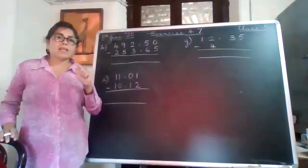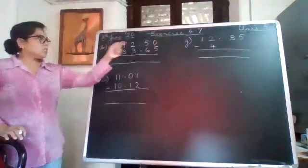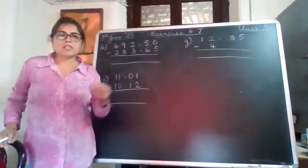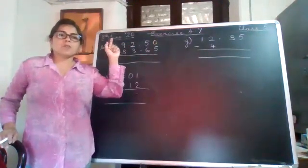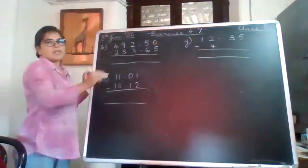But in subtraction you have to be very careful. You have to change it into like decimals, means the number of places after the point has to be equal for both the numbers, otherwise you will definitely go wrong.